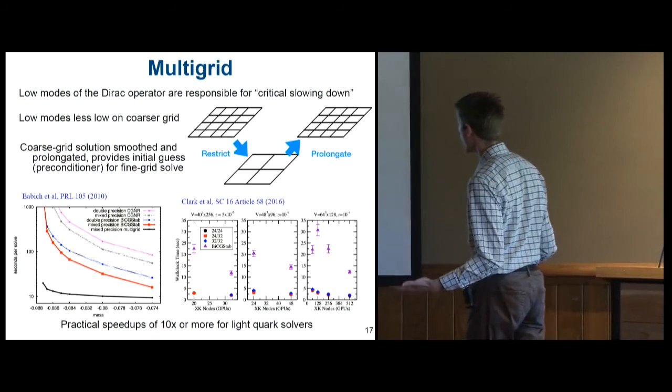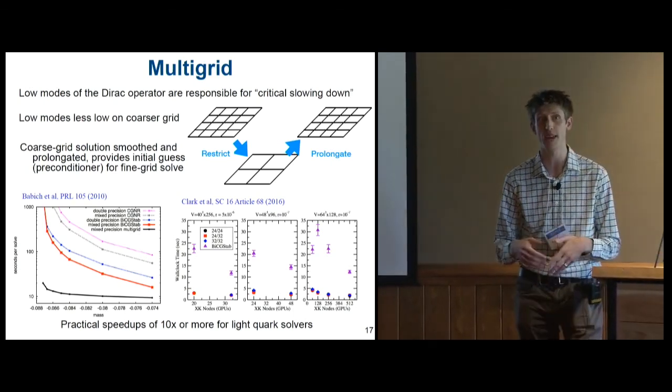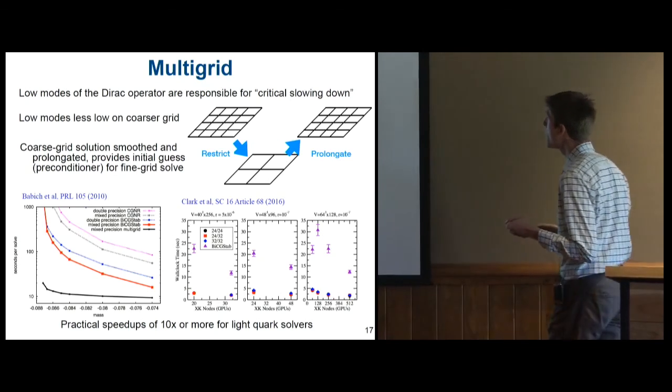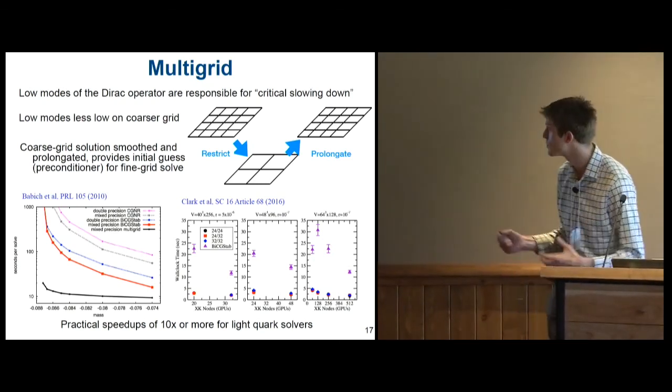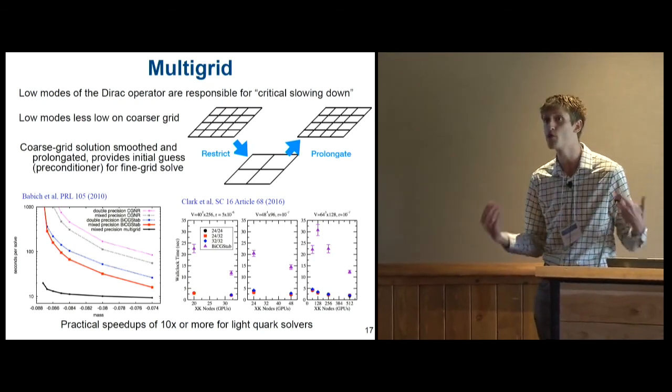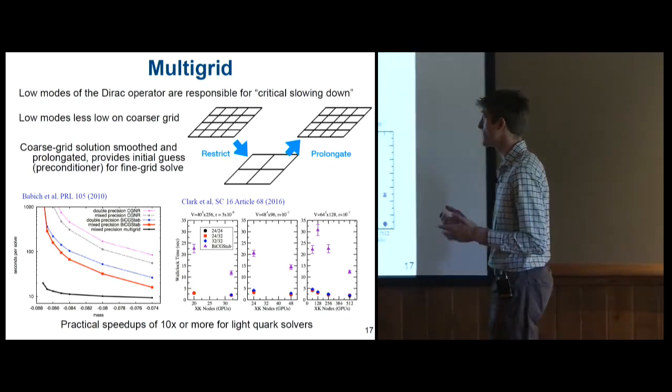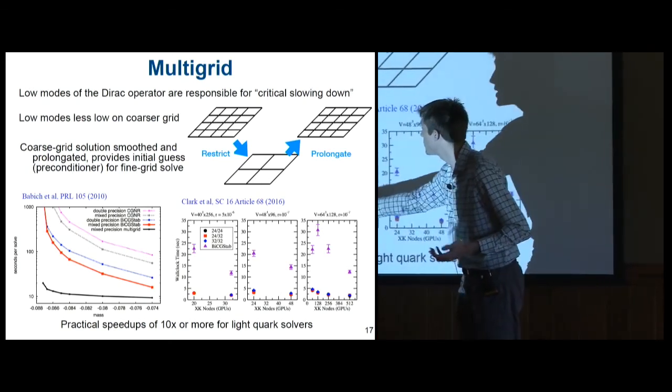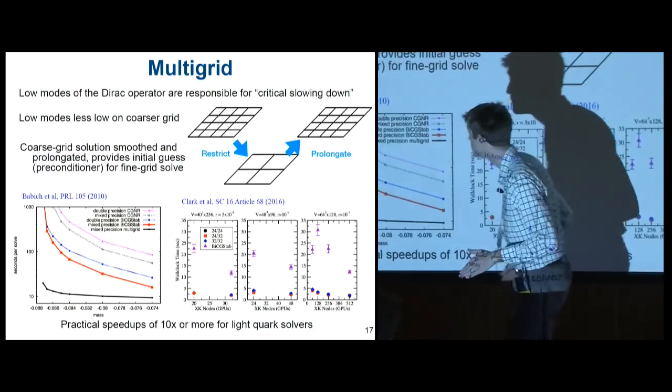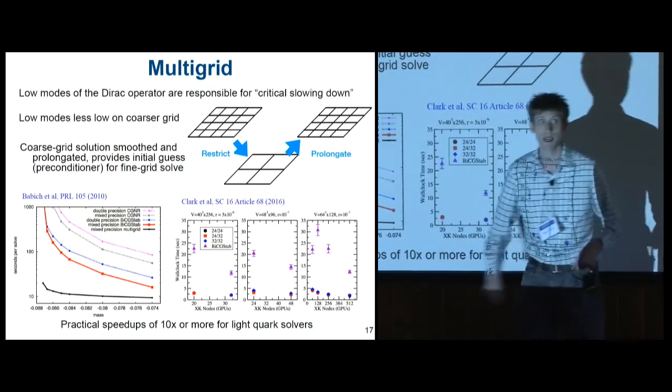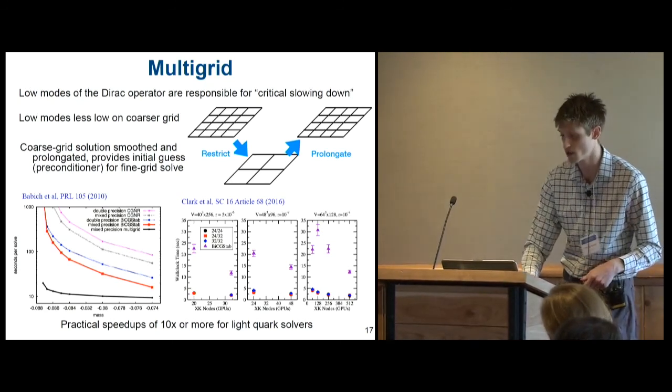The real essential one for getting down to light quark masses though is multigrid. And I'm sure you're all familiar with multigrid algorithms in some contexts, but for us the way we think about it is that there are low modes of the Dirac operator that are the ones responsible for making this matrix horribly ill-conditioned as we approach zero quark mass. And these low modes are smooth, and they're less low on a coarser grid. So we coarsen, we solve the low modes, we smooth, we prolongate back, and we basically just consider that a preconditioner for an outer parallel iterative solver on the fine grid. And these sort of multigrid algorithms have just done amazing things in the last decade. So here's a plot of seconds per solve as a function of quark mass, and lighter is this way. And the black curve at the bottom that doesn't go crazy is multigrid. And it scales nicely, gives 10x speedups at least for light quark solvers.